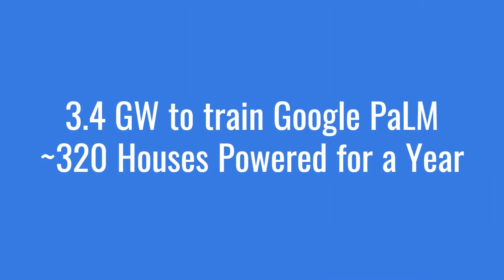For example, in order to train Google PaLM, 3.4 gigawatts were needed — the same amount that 320 homes would consume over an entire year. You can imagine also how this impacts emissions to power these models, as well as the manufacturing of the hardware needed to execute them.